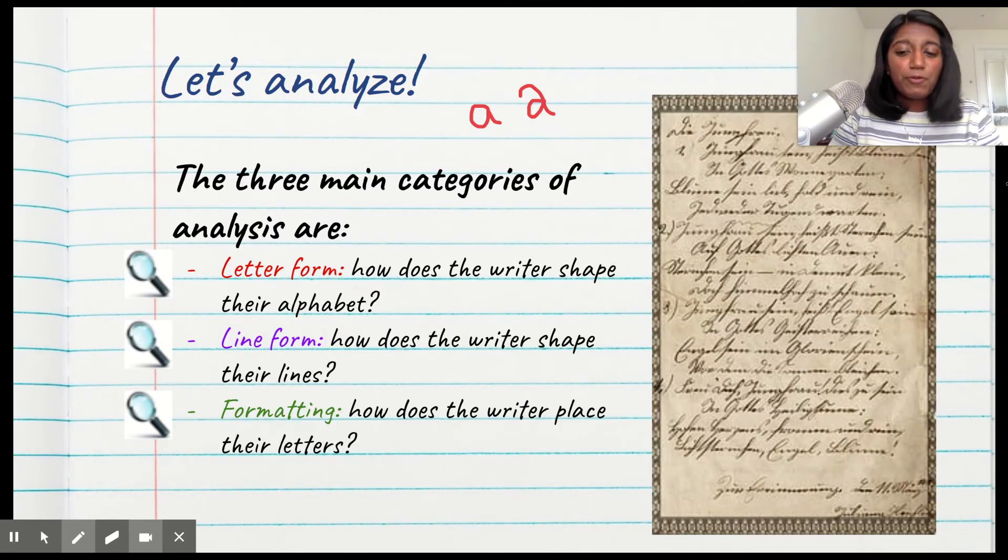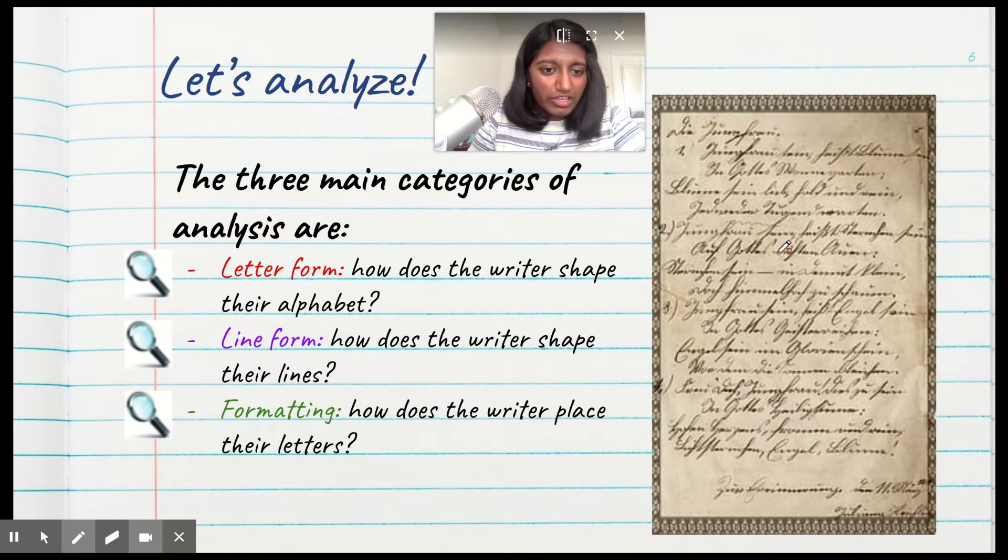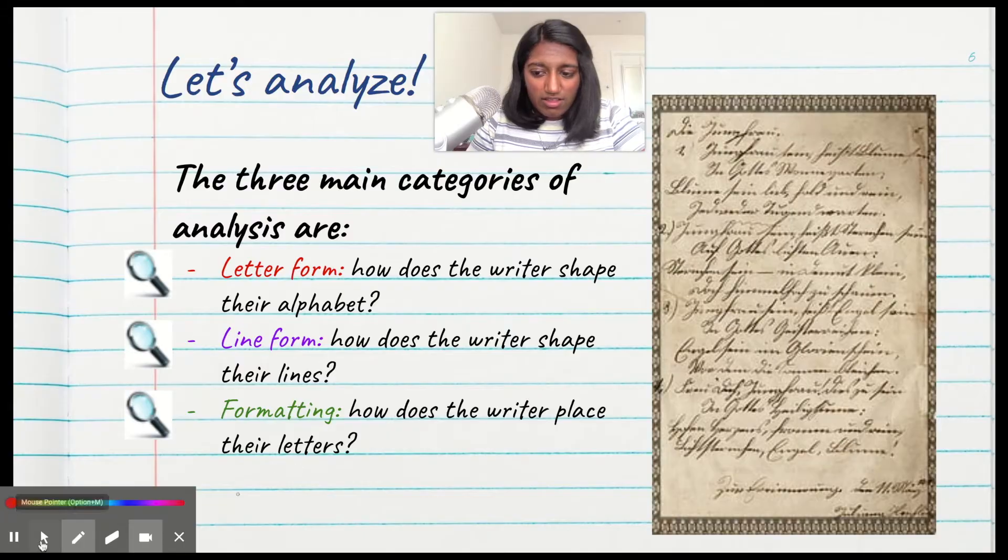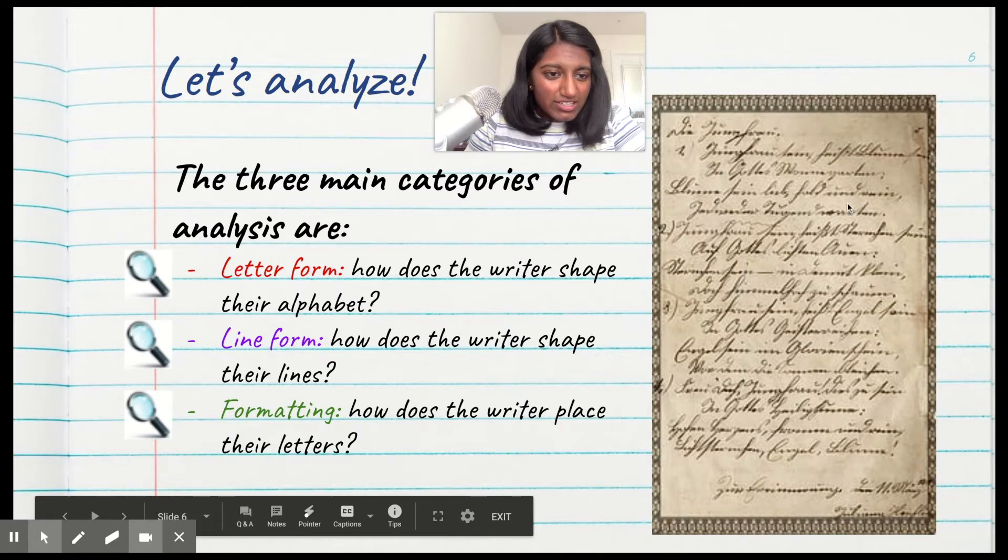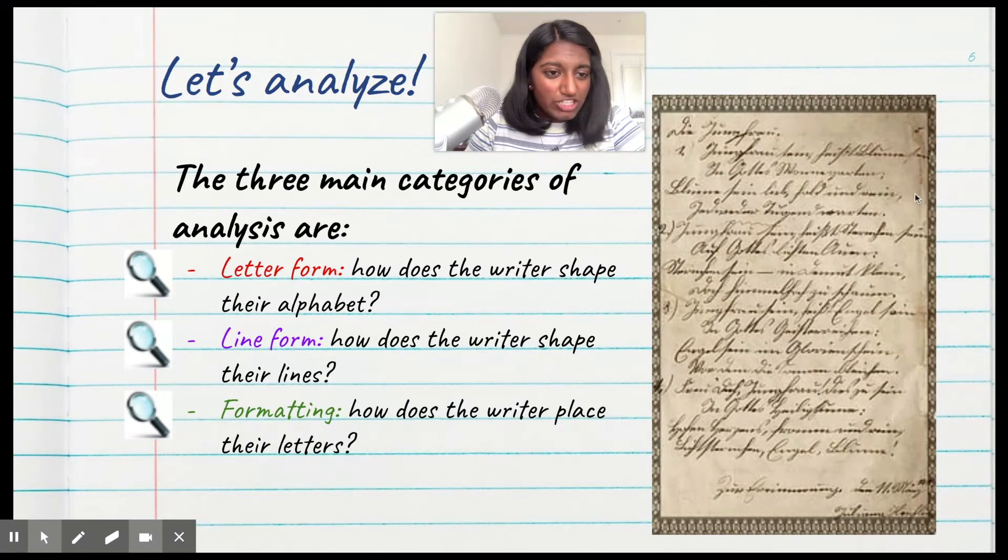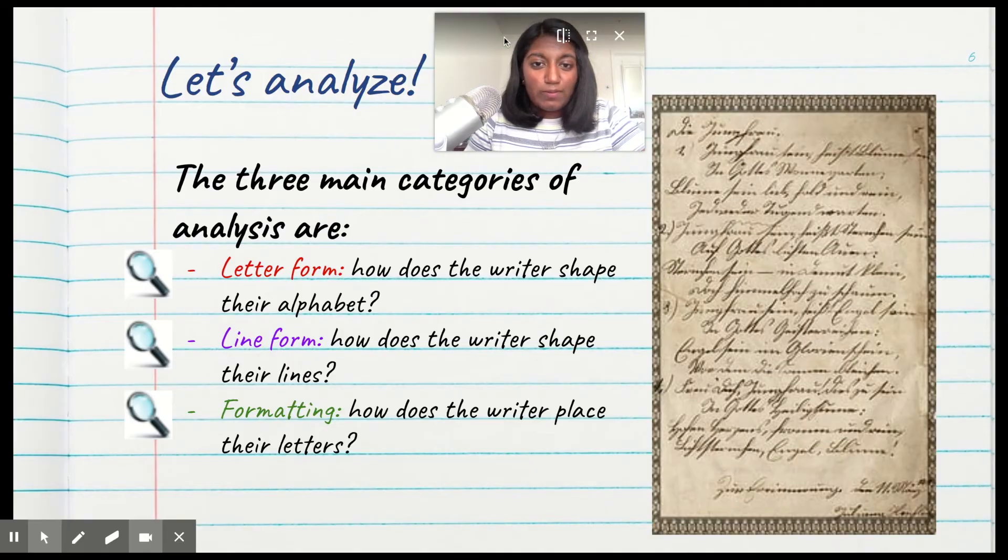And finally, we have formatting—how does a writer place their letters? I'm going to move my face a little bit so we can see this document over here on the right. As you can see, these letters aren't going too far off the page on this side. There's a margin, which is an example of formatting. And on top of that, it's pretty close together. That's also an example of formatting spacing.